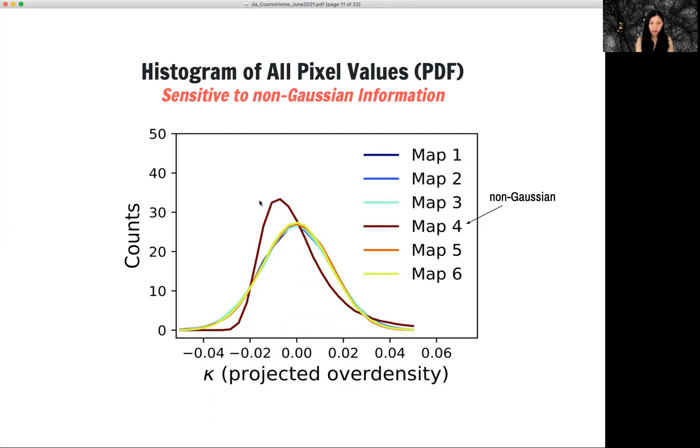So the next question is, how do we extract all this information from the maps we observe?